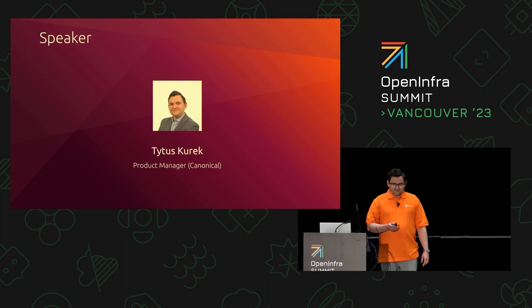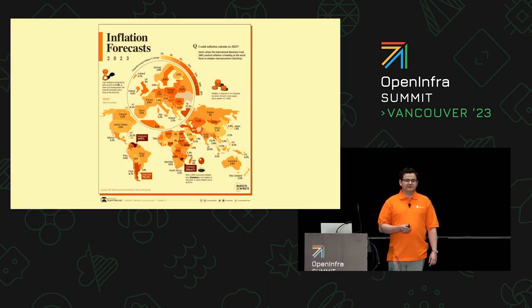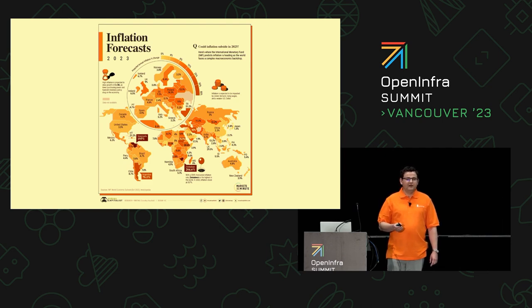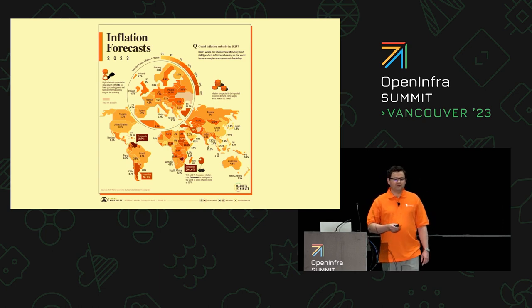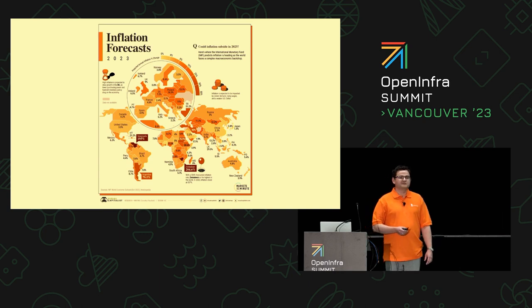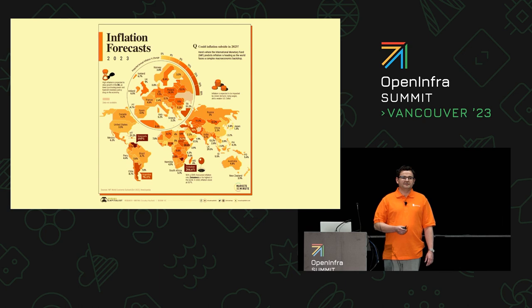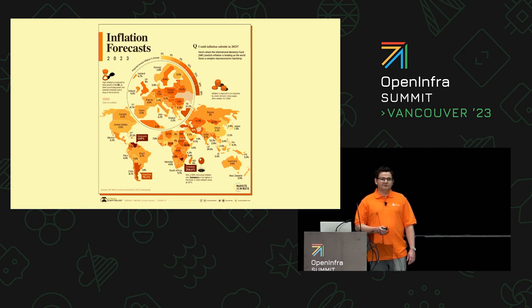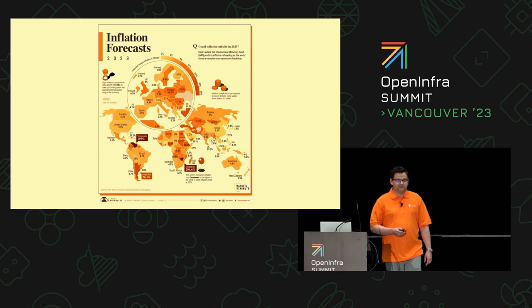Just to set the stage of this conversation, this is how the inflation forecast for 2023 is going to look like globally, according to the latest estimations. After two difficult pandemic years and a lot of geopolitical mess happening in 2022, inflation has increased globally, putting a lot of pressure on organizations and IT departments. All of that translates into increasing costs — cost of life, cost of energy, data center rental, and operational staff salaries — it's everything.